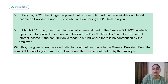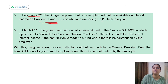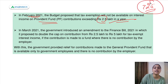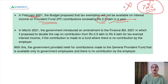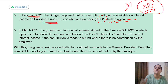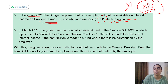Previously there was a tax exemption on the Employee Provident Fund — whatever interest you were earning, you were not required to pay tax on the same. That's the reason people preferred this fund and contributed large amounts. Then in February, when the budget came up, it proposed that tax exemption will not be available on interest income on provident fund if the contribution exceeds 2.5 lakh in a year for private employees. In March 2021, the government introduced an amendment which doubled the cap to 5 lakh for tax-exempt interest income if the contribution is made to a fund where there is no contribution by the employer.